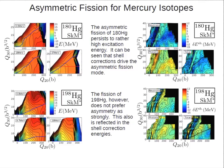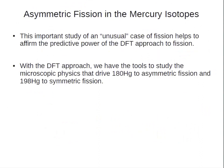We can see it very nicely and clearly in the shell correction energies. The darker blue in the pathway shows the lower energies, and that very closely follows what the total energy surface would have predicted. For mercury-180, the shell structures drive the fission pathway towards asymmetry. For mercury-198, however, the shell structures change so that a symmetric pathway is preferred. This is a very nice study of an unusual case where nobody really thought mercury-180 would do anything special — then the experiment found it fissions asymmetrically. Importantly, DFT already predicted asymmetric fission for mercury-180 without any re-tuning.